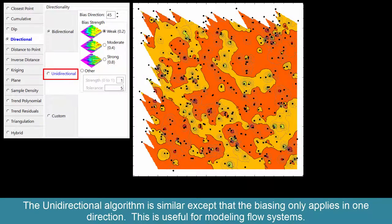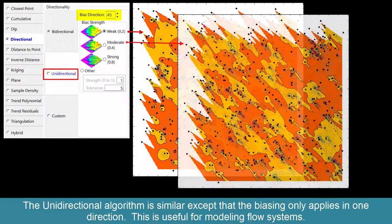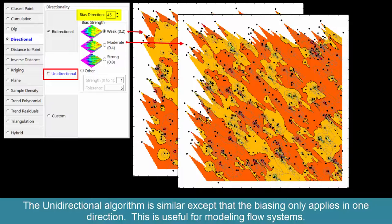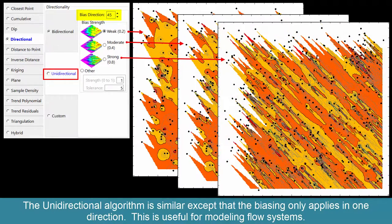The unidirectional algorithm is similar, except that the biasing only applies in one direction. This is useful for modeling flow systems.